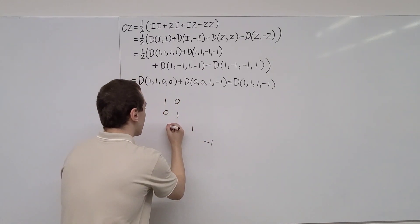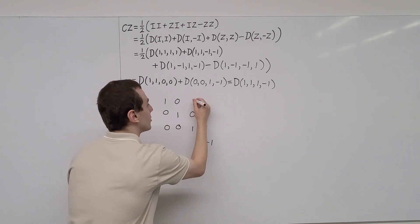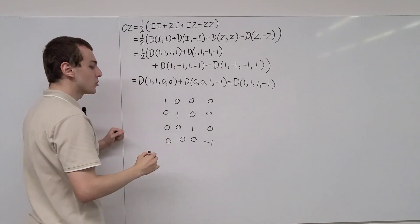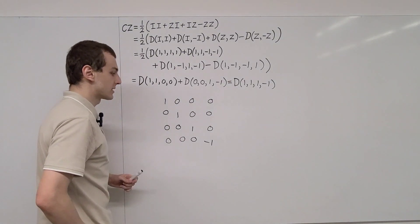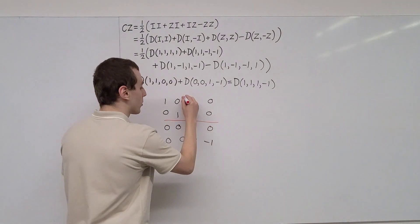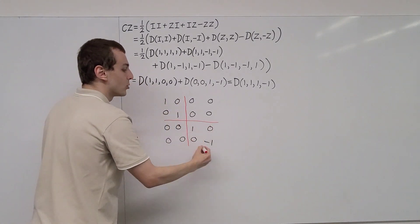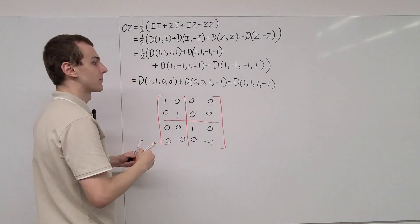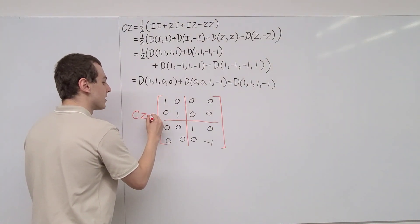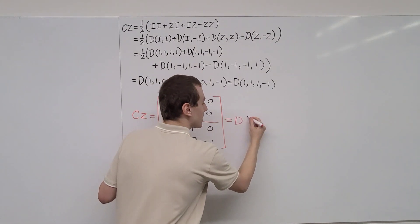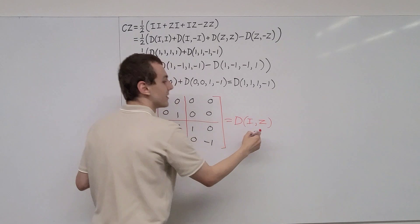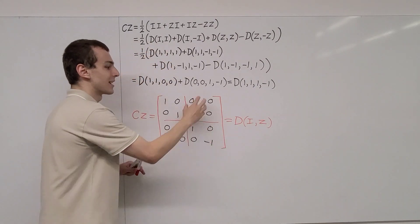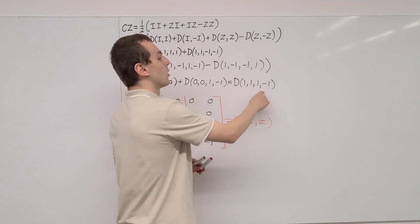We fill in the off-diagonal zeros explicitly to complete the 4x4 matrix. We can also break this up into smaller quadrants: in the upper-left we have the identity, and in the lower-right we have Pauli Z. So another way we can write the controlled Z gate is as a block diagonal matrix with the identity followed by Pauli Z. This notation is very useful when dealing with diagonal matrices, since it allows us to see the quadrant structure of these 4x4 matrices.